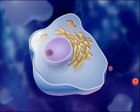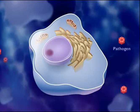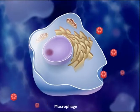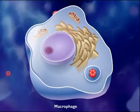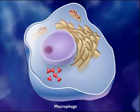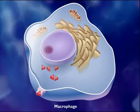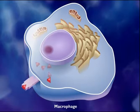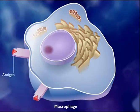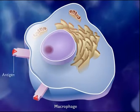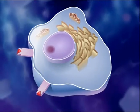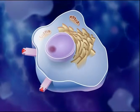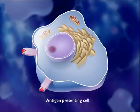Activation of the immune response typically begins when a pathogen enters the body. Macrophages that encounter the pathogen ingest, process, and display the antigen fragments on their cell surfaces. Macrophages with antigen fragments displayed on their surfaces are called antigen-presenting cells.